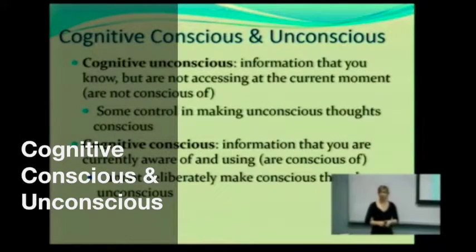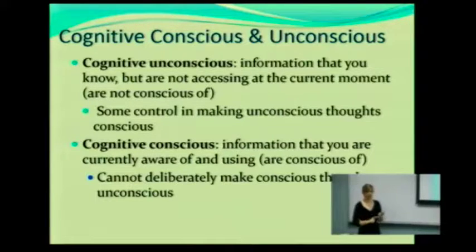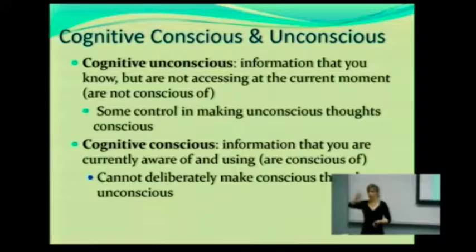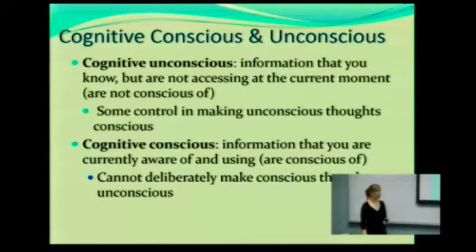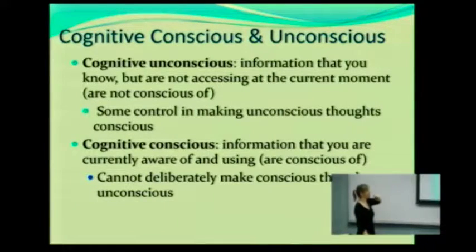Part of this is you want to look at what's called the cognitive conscious and cognitive unconscious, because when we get information, we process it in very different ways, depending on what type of information it is and what we're going to do with it. The cognitive unconscious is information that you know but are not accessing at the current moment — in other words, you're not conscious of it.